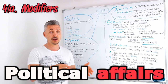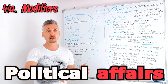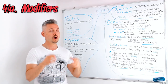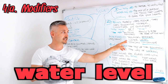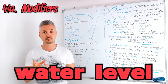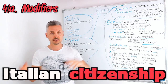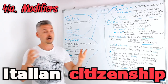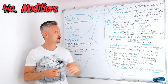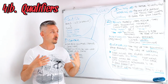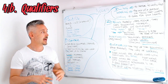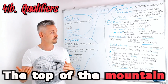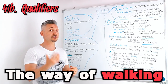Here are three examples of modifiers. 'Political affairs' — in this case, 'political' is an adjective modifying 'affairs.' 'Water level' — here we have two nouns. 'Italian citizenship' — 'citizenship' is the noun and 'Italian' is the adjective modifier. Now we have qualifiers, which are prepositional phrases — for example, 'the top of the mountain,' 'the way of walking.' Prepositional phrases are the ones that follow 'of.'